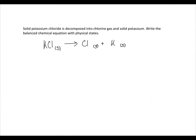We know that chlorine is diatomic, so there are two atoms of chlorine per molecule. We can set up a table to balance our equation. We have reactants and we have products — we have potassium and chlorine.